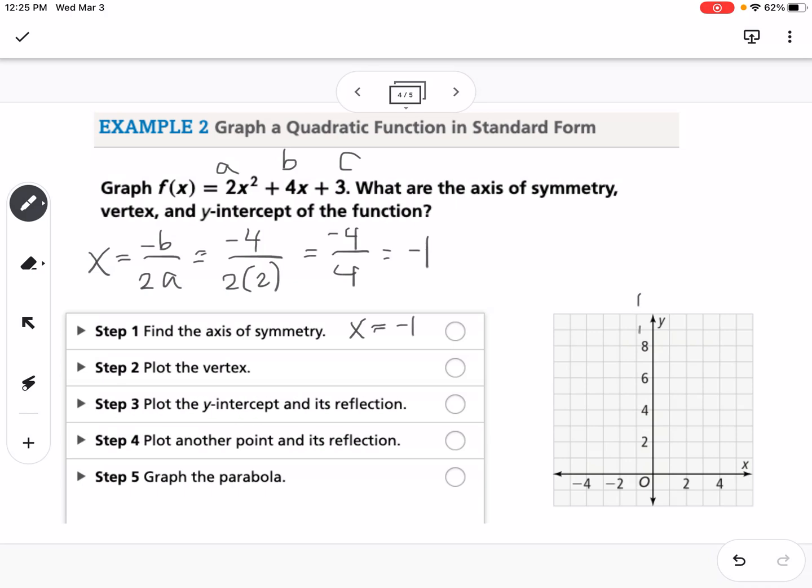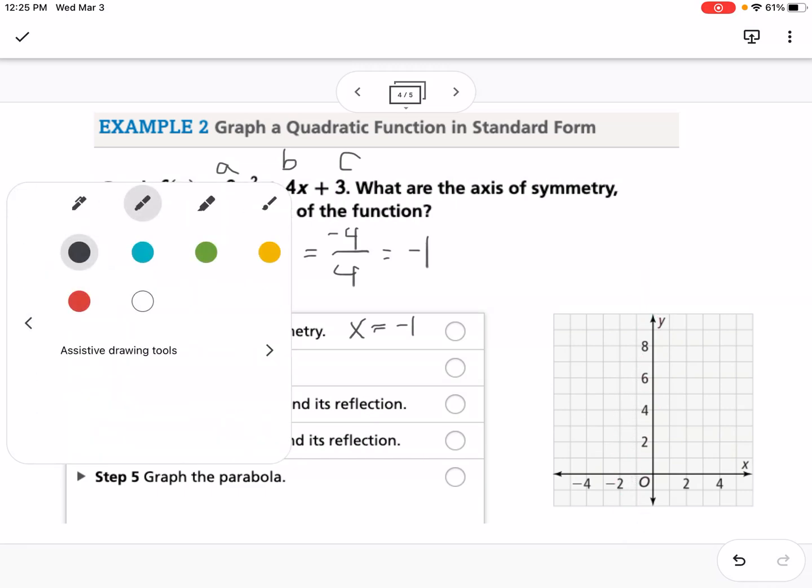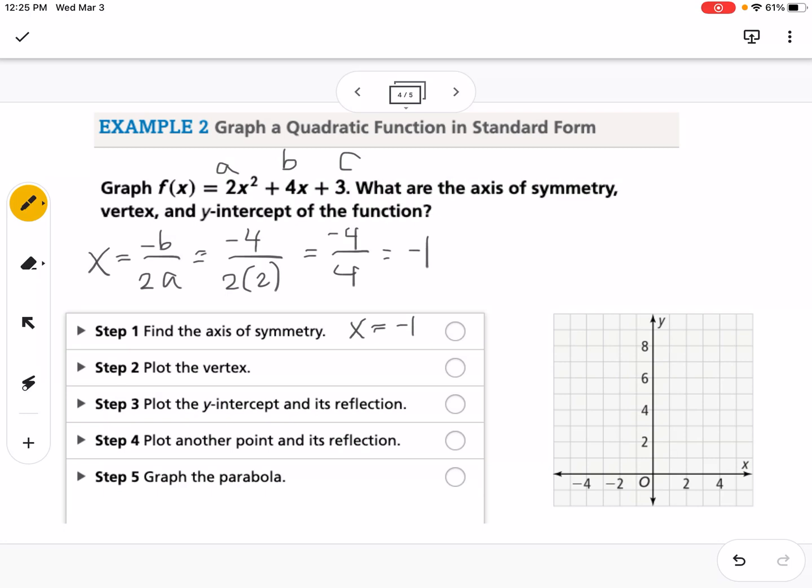I'm going to go to negative 1 on my graph and just kind of draw a dotted line so that I know that's going to be my axis of symmetry. I'm going to take a highlighter and highlight that axis of symmetry so we have it there.